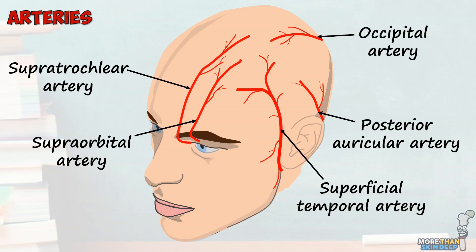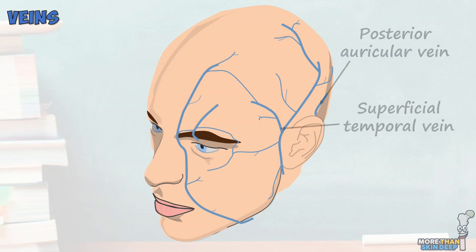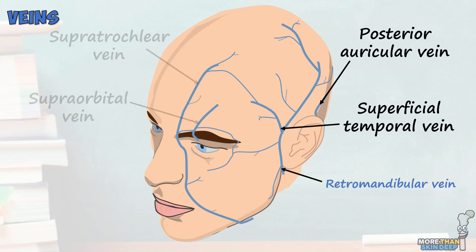The veins of the scalp follow a similar distribution to the arteries and are named correspondingly. The superficial temporal and posterior auricular veins contribute to the formation of the retromandibular vein. The supratrochlear and supraorbital veins contribute to the angular and eventually the facial vein. The occipital vein drains into the suboccipital plexus. The cutaneous veins communicate directly with the veins of the diploë and dural venous sinuses via emissary and mastoid veins.